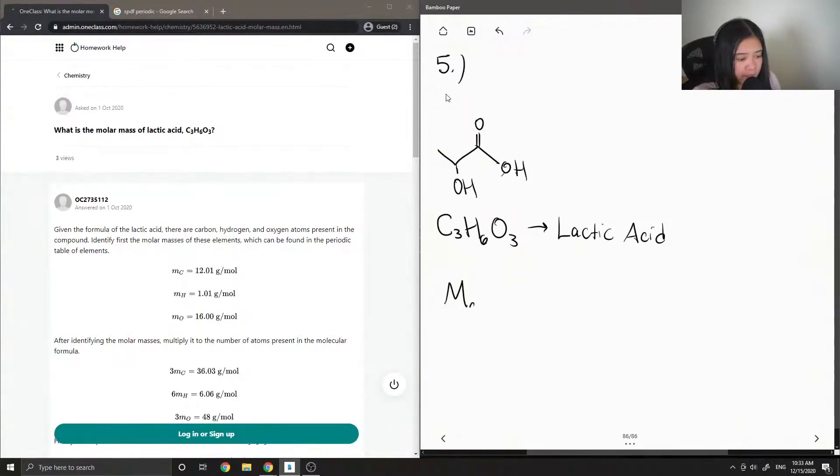So to find the molar mass of lactic acid, we would first need all of the atomic masses of the atoms involved in the compound, which is carbon, hydrogen, and oxygen. So their atomic masses can be found on the periodic table.